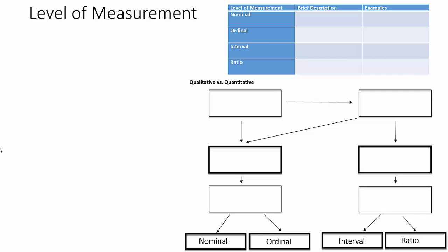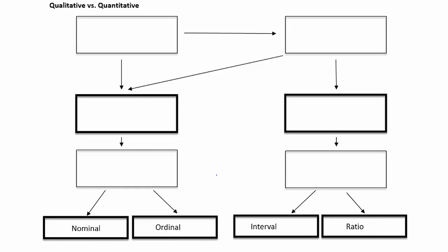We're going to look at what questions we need to ask ourselves to determine if data is nominal, ordinal, interval, or ratio. In the chart, we start at the top left. The question we need to ask is: are the possible values numeric? You'll notice the different weights of lines in the flow chart — the question box has a regular line, while the answer boxes have a bold line.